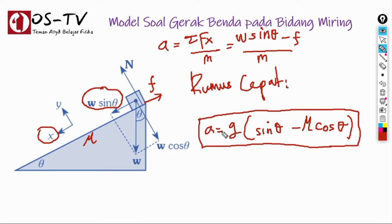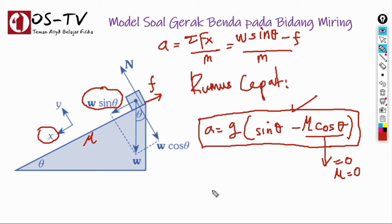Ketika bidang kasar, maka persamaan A = g(sin θ - μ cos θ) langsung kita gunakan. Tetapi ketika permukaan bidang licin, maka bagian akhir persamaan ini akan sama dengan 0, karena μ = 0. Dengan demikian, ketika licin, percepatan benda sama dengan g sin θ. Ini tentu akan lebih mempercepat proses penyelesaian soal. Mudah bukan?